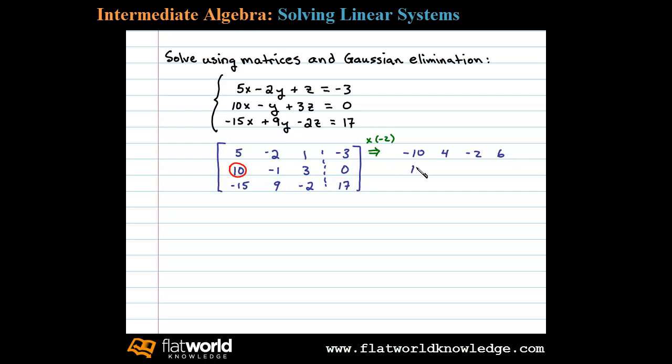Now we'll rewrite the second row underneath that and then add them together. That'll result in 0, 3, 1, and 6. We'll use this to replace the second row. Next we want to replace the first element of the third row with 0.